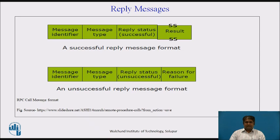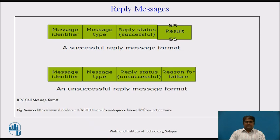A typical RPC reply message format for successful and unsuccessful reply may take this particular form. The message identifier field of a reply message is the same as that of its corresponding call message, so that a reply message can be properly matched with its call message. The message type field is set to indicate that it is a reply message. For a successful reply message, the reply status field is normally set to 0 and is followed by the field containing the result of procedure execution. For an unsuccessful reply message, the reply status field is set to 1 or a non-zero value to indicate failure. The value of the reply status field indicates the type of error, and normally a short statement describing the reason for failure is placed in a separate field following the reply status field.